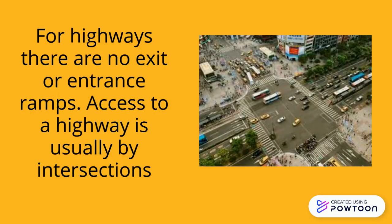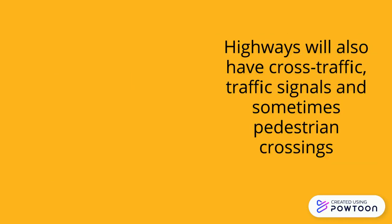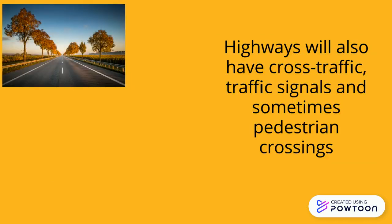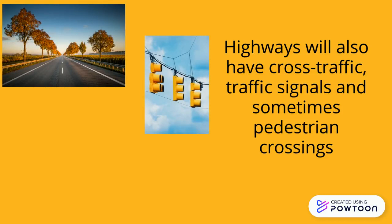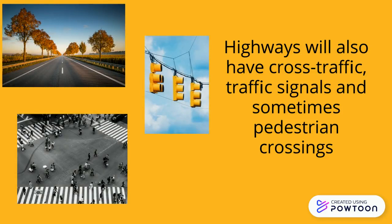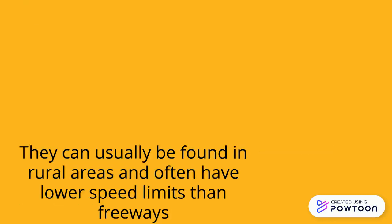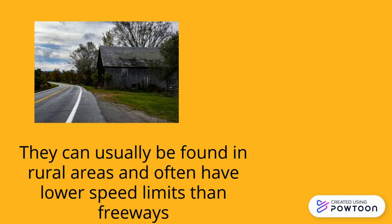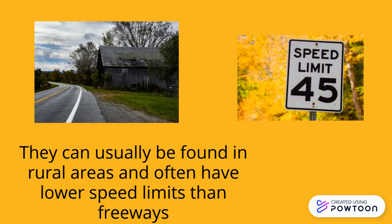For highways, there are no exit or entrance ramps. Access to a highway is usually by an intersection. Highways will also have cross traffic, traffic signals, and sometimes pedestrian crossings. They can usually be found in rural areas and often have lower speed limits than freeways.